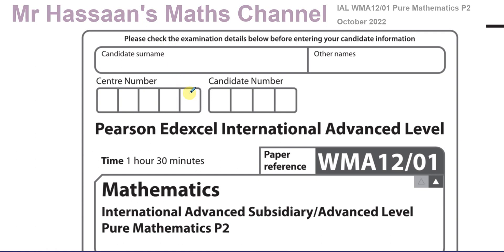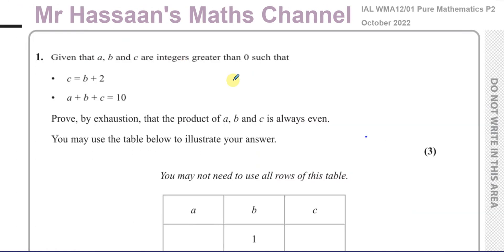So I'm going to go through each question one by one. As we know these papers are one and a half hours long, 75 marks. Let's just get started with question number one here. Question number one says that given that A, B and C are integers greater than zero, such that C equals B plus 2 and A plus B plus C equals 10, prove by exhaustion that the product of A, B and C is always even.